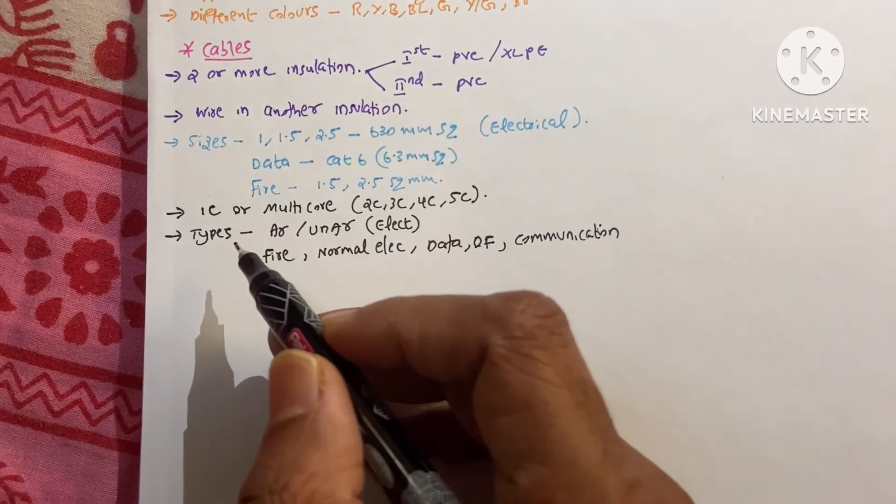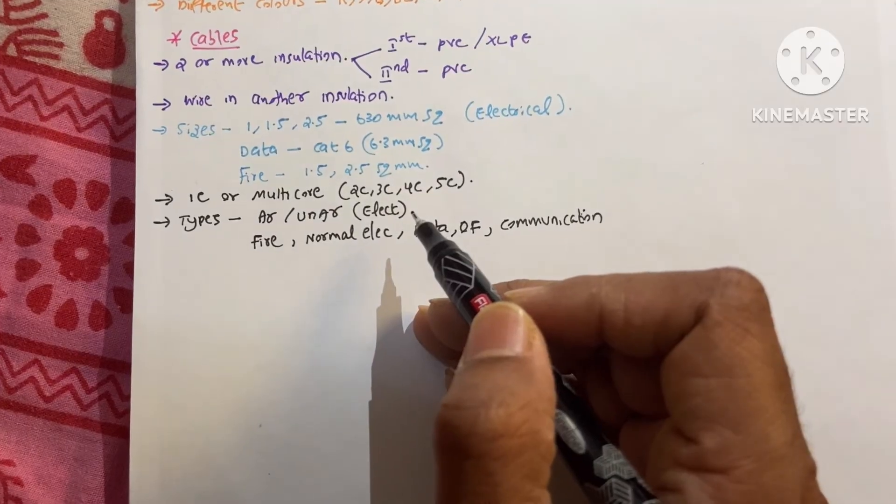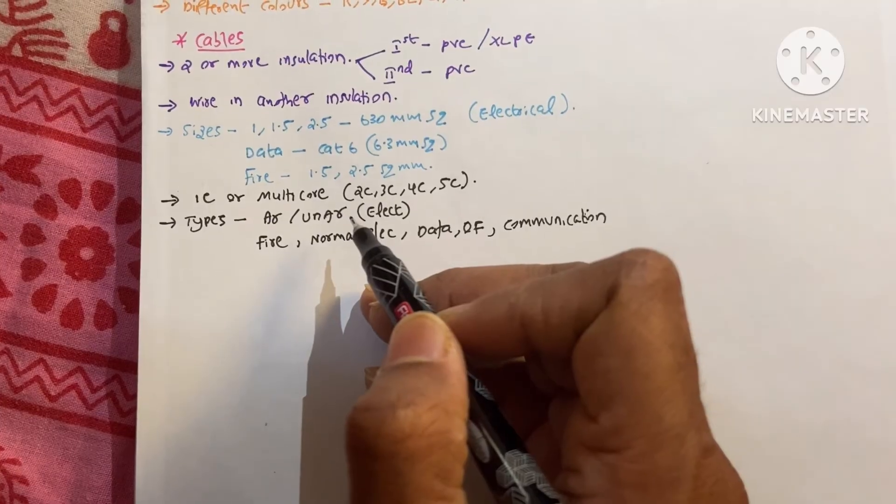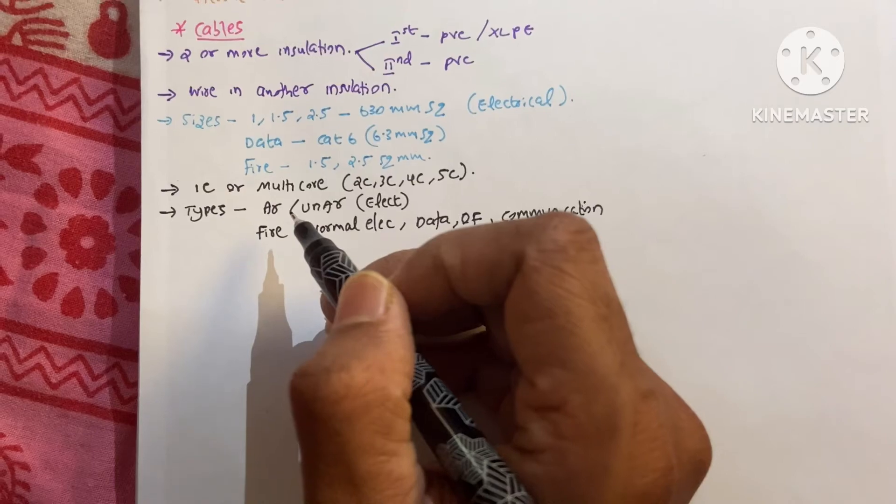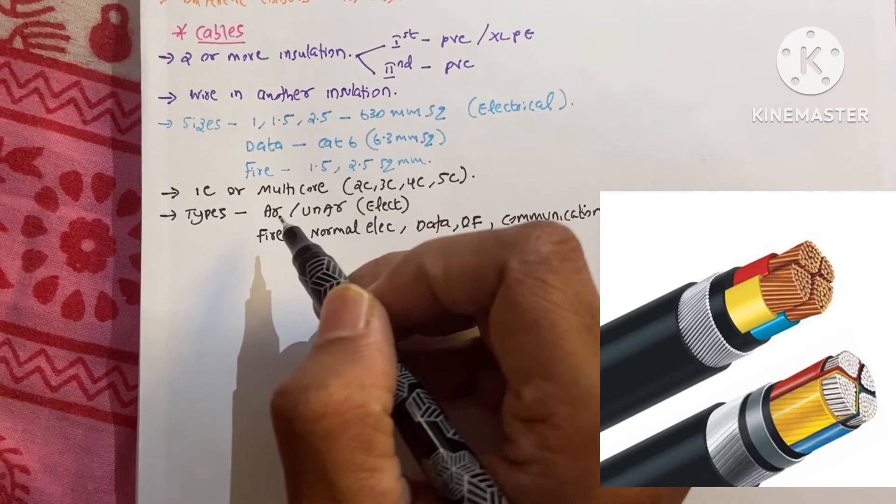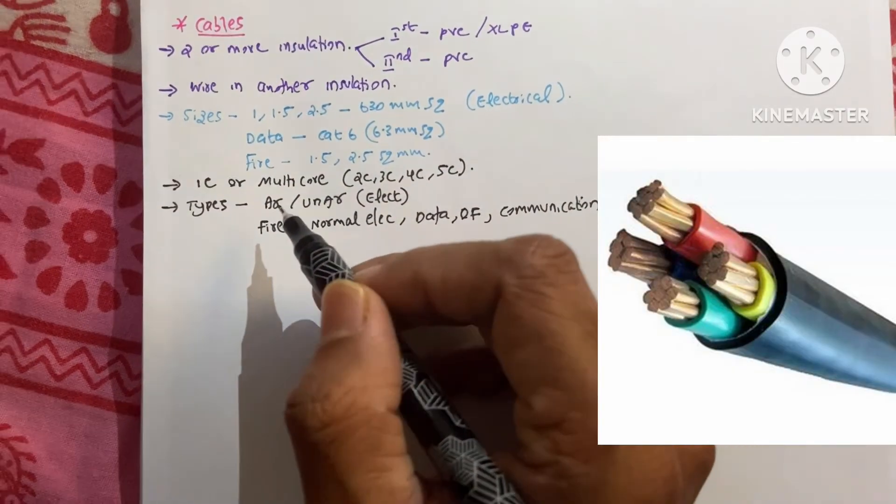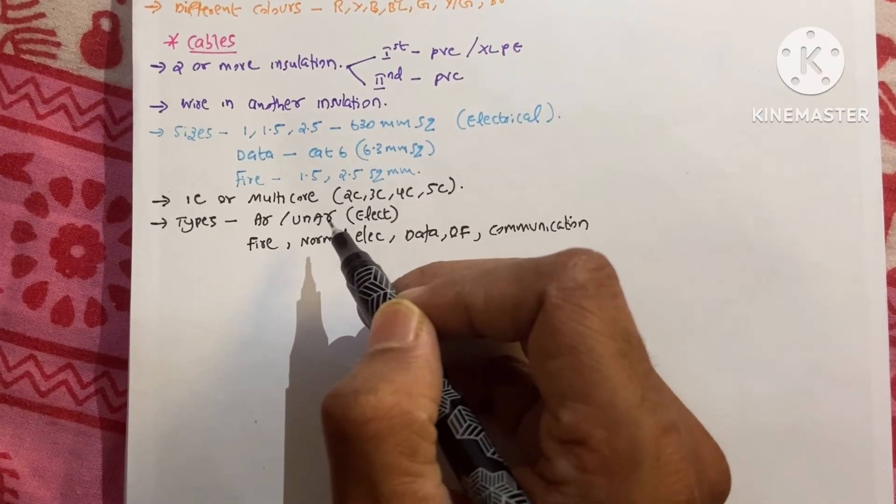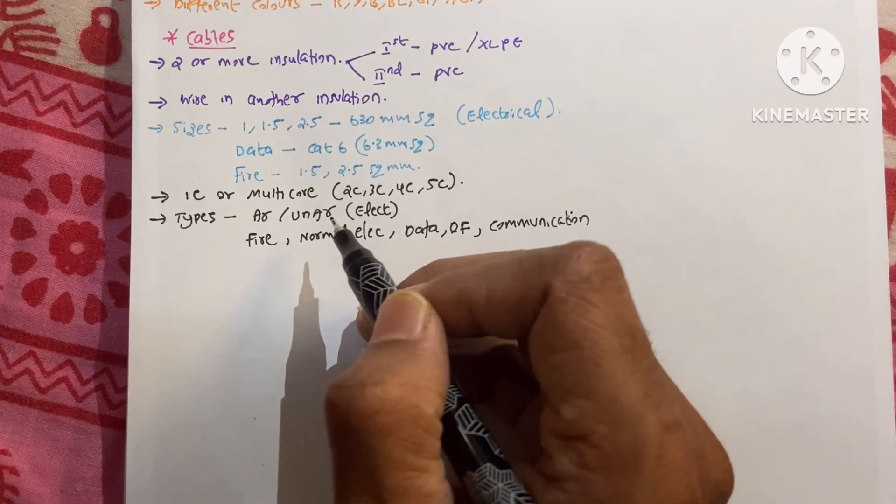Next one is the types. When we talk about the electrical cable, we can mainly say that there are two types. Armored and unarmored types. Armored means we can see an extra protection with the help of aluminum or steel wires or tapes. Unarmored means there is no such thing. We would use these armored cables in rigid conditions. Unarmored means only the inside applications because it is less protected.